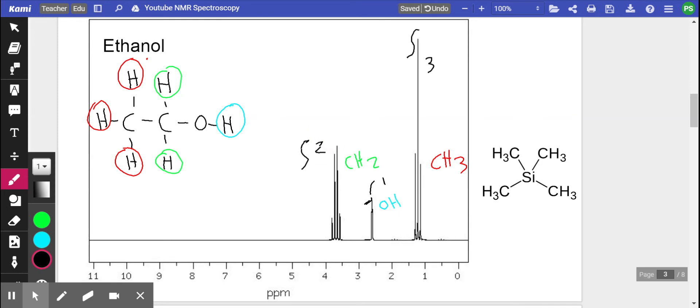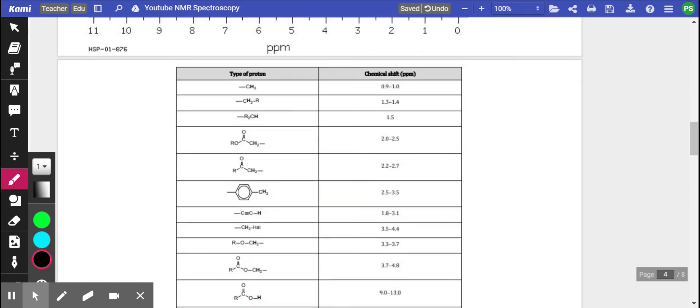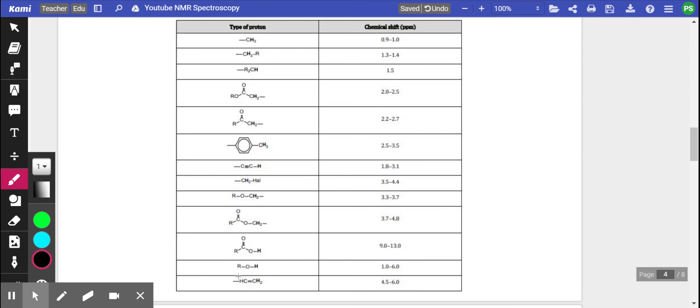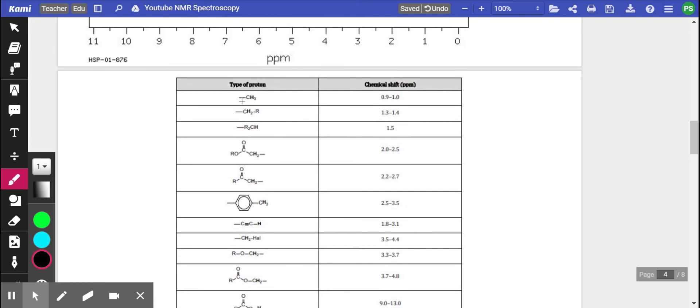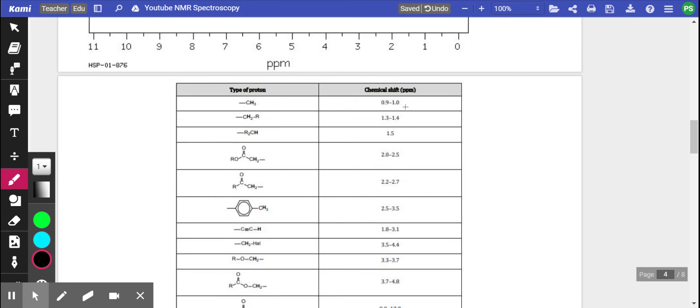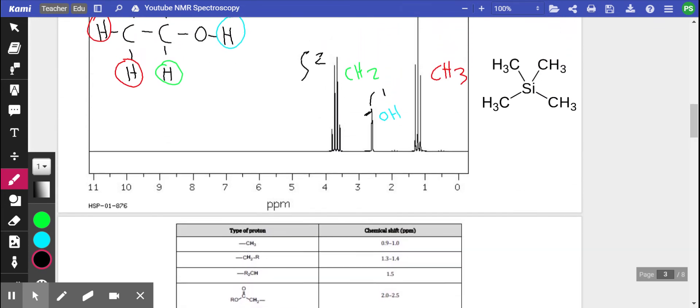Now talking about functional groups, if we scroll down to the data booklet supplied by IB, it tells you where you can find different functional groups. For example, a CH3 group far away from any electronegative elements will appear between 0.9 and 1. If we scroll back up, that is where we found our CH3 group.